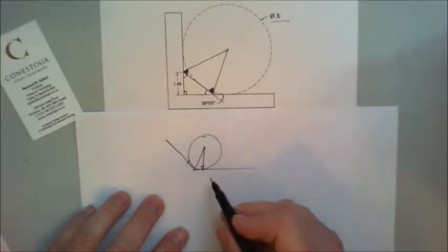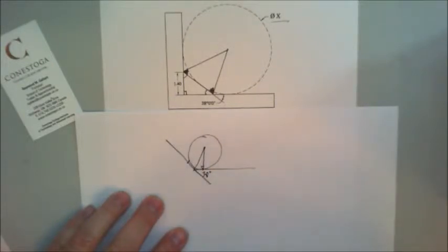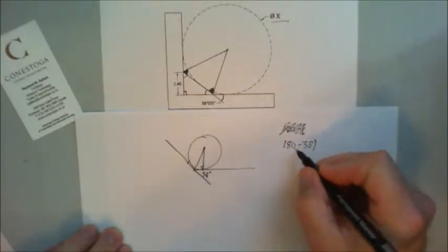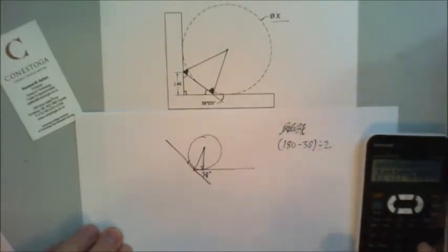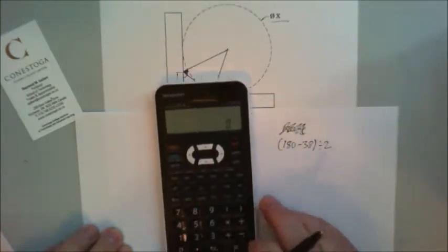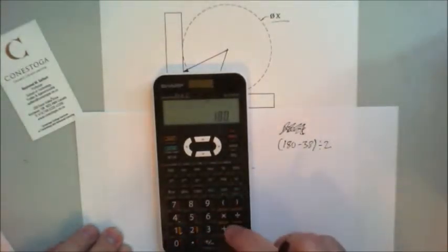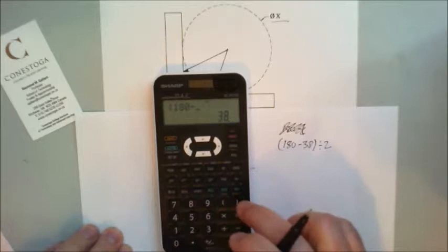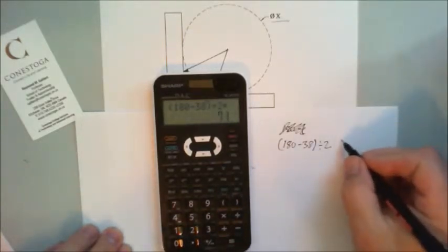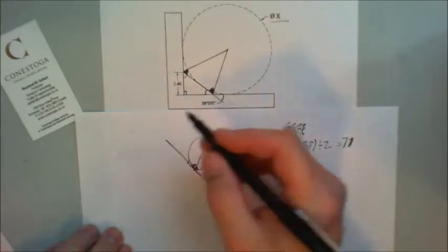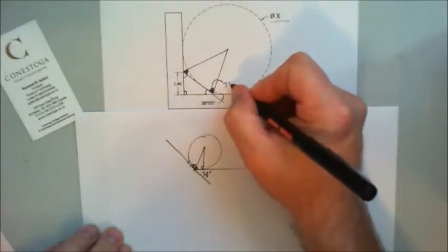Let's take a look. If I extend this line down, this here is 38 degrees. 180 minus 38 degrees divided by 2, because we're bisecting this angle. That would be that half, but we want this half. 180 minus 38 bracket divided by 2 equals 71. Therefore, this internal angle is 71 degrees.